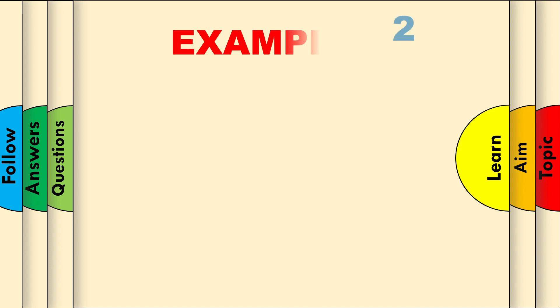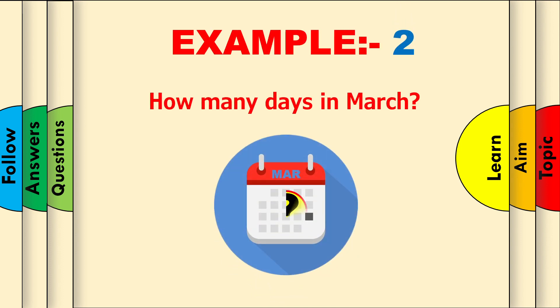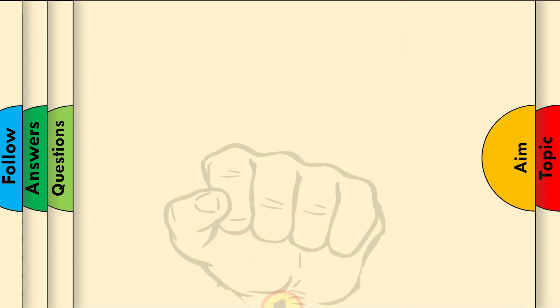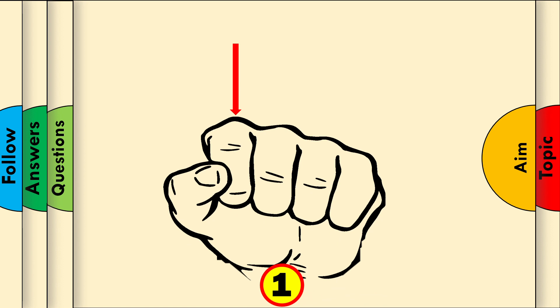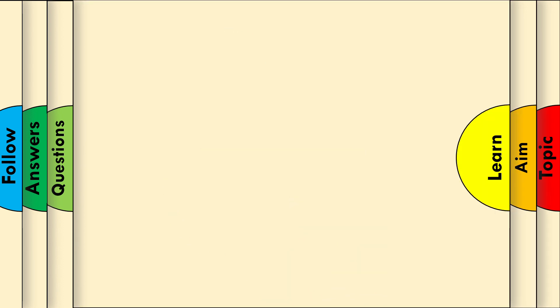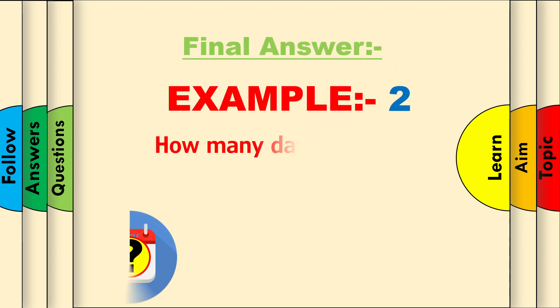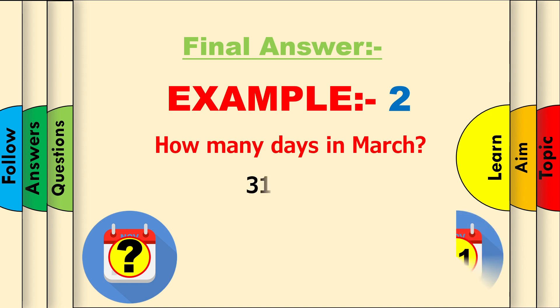Example 2: How many days are there in March? Let's use our fist technique and start counting until March. January, February, and March. The final answer for Example 2: How many days are there in March? Since March was a knuckle month, 31 days.